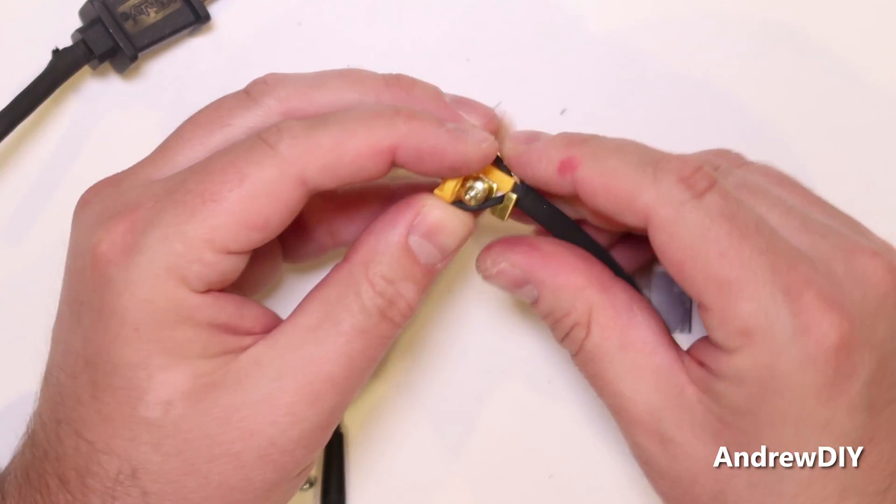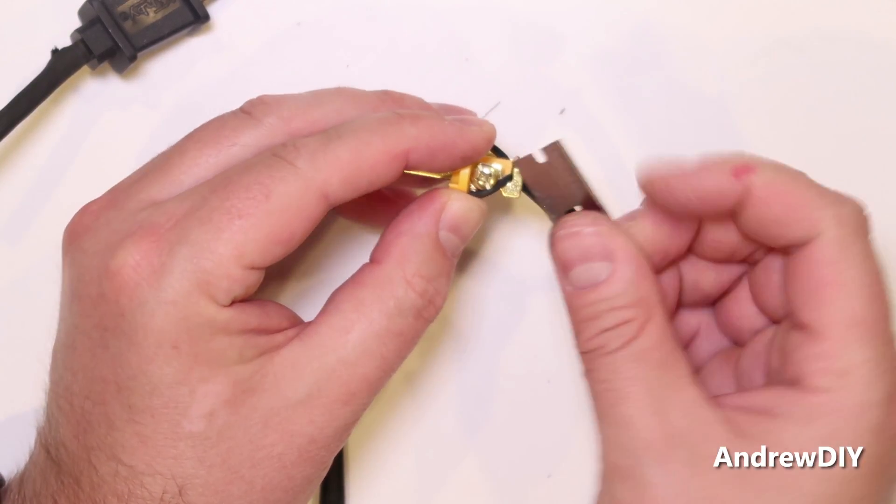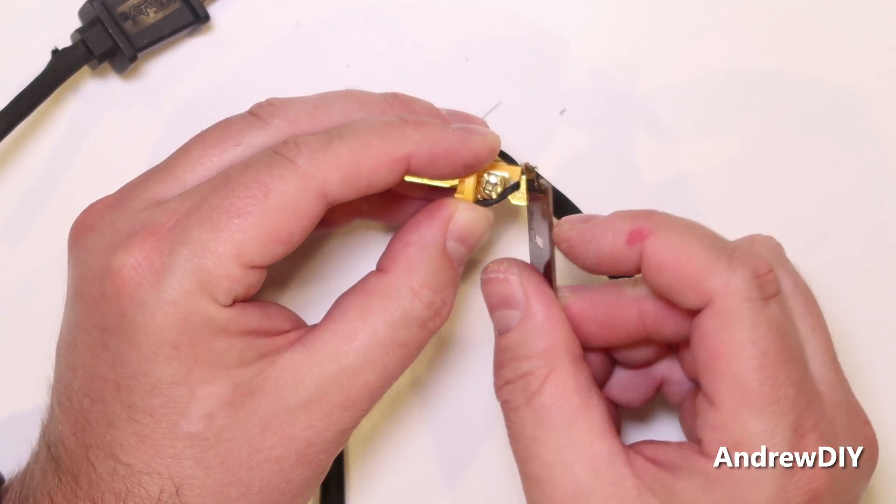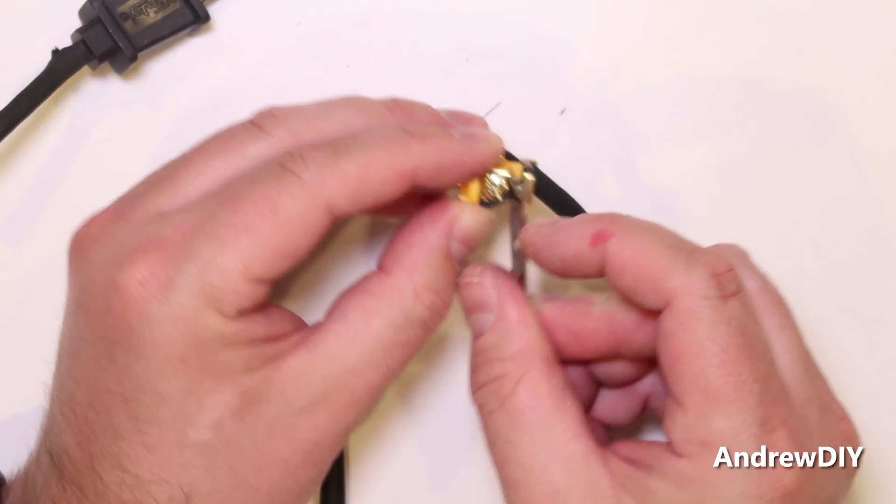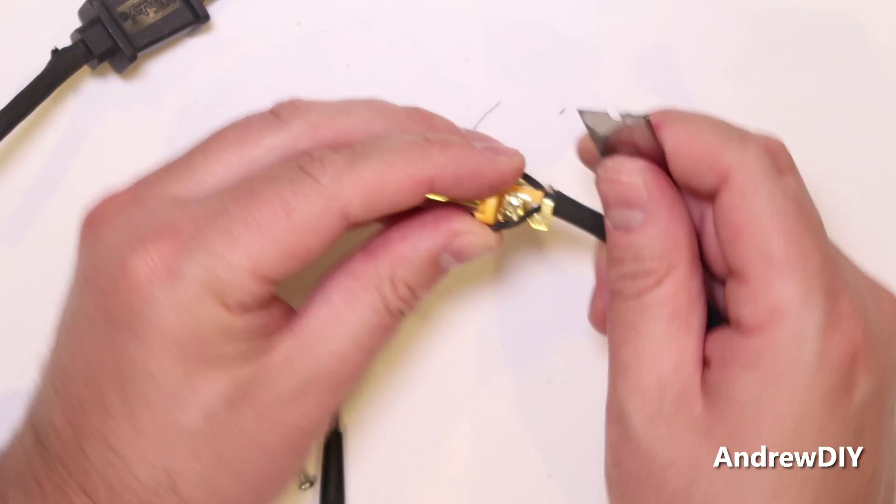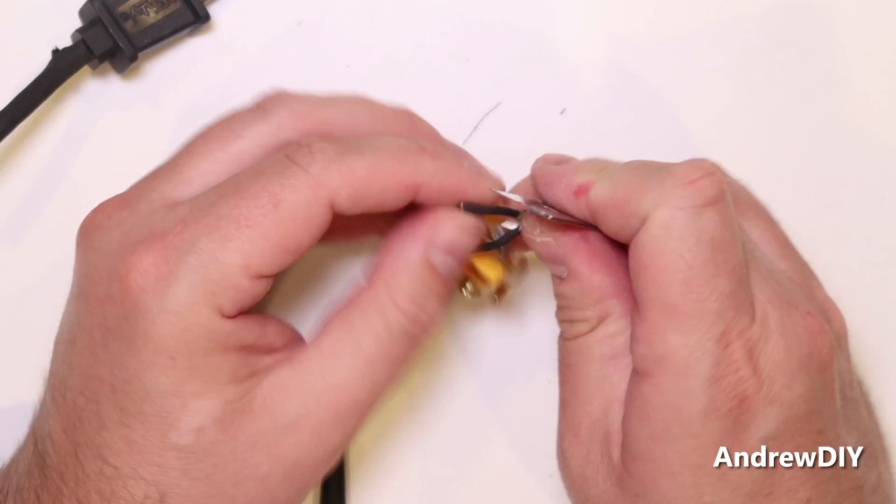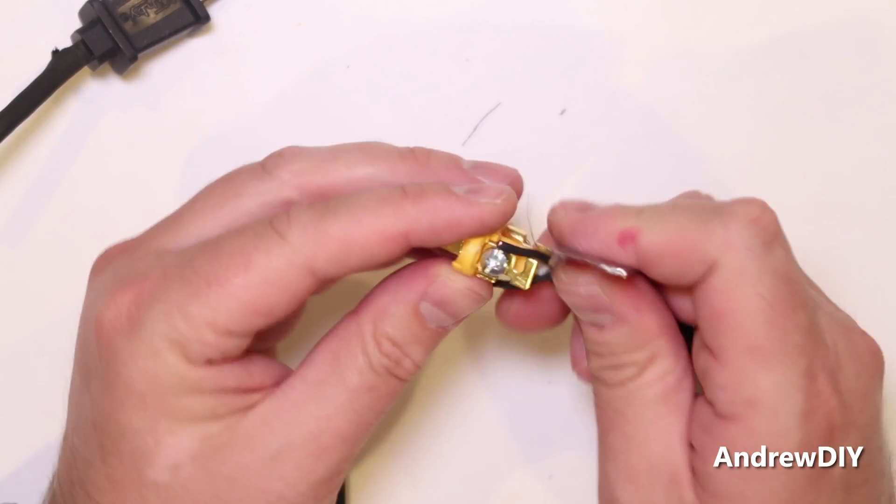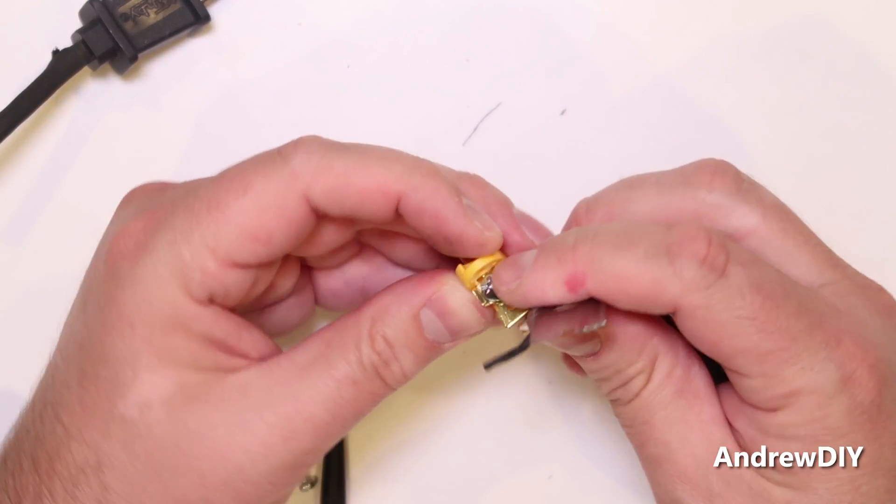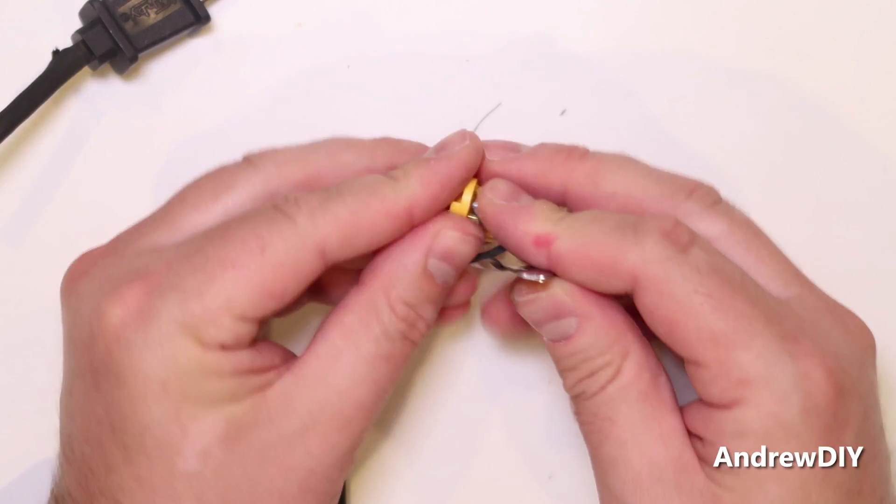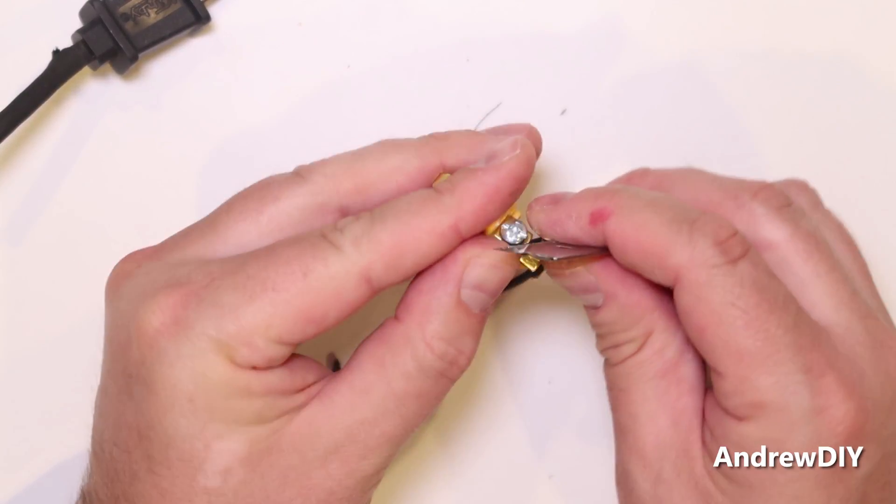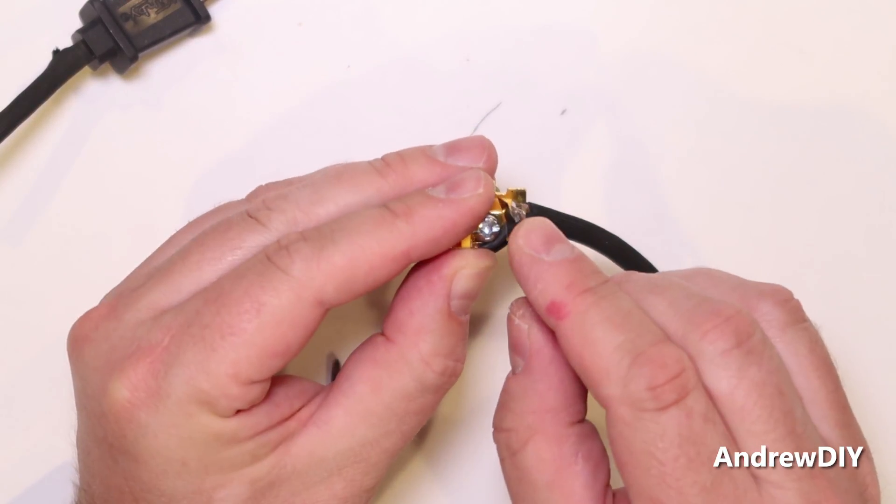Now in this model it kind of pinches it there, and so we're just going to graze the insulation just slightly with the razor blade. It does not need much pressure at all to do this. And on the opposite side we're going to do the same thing.